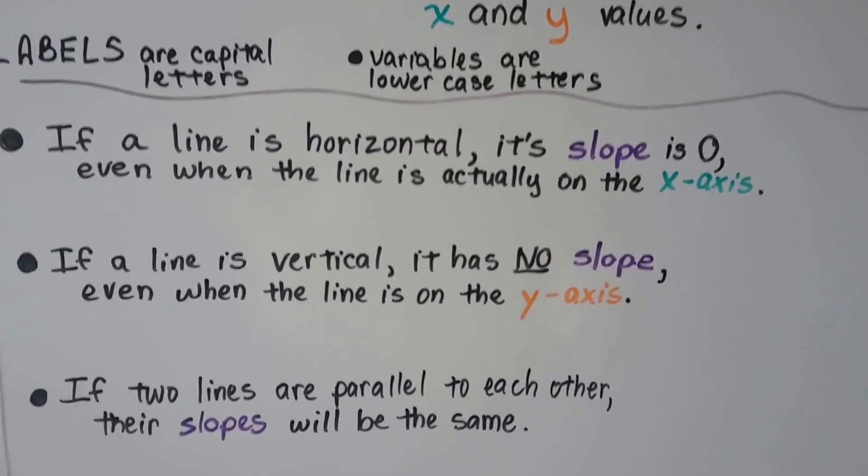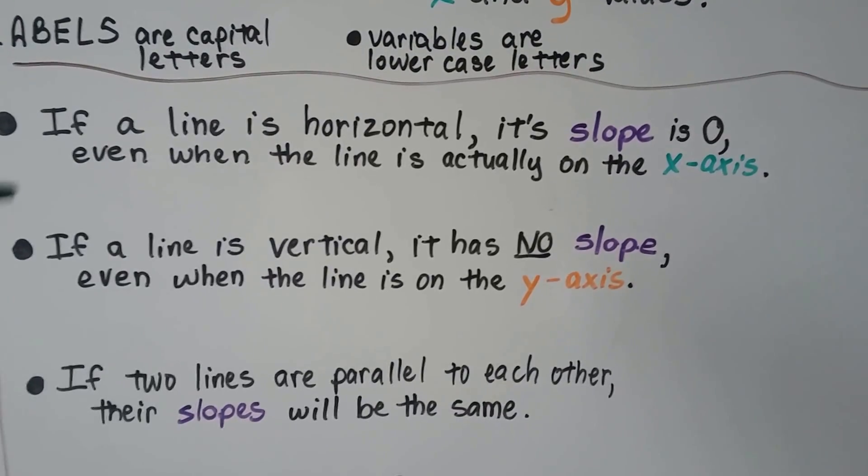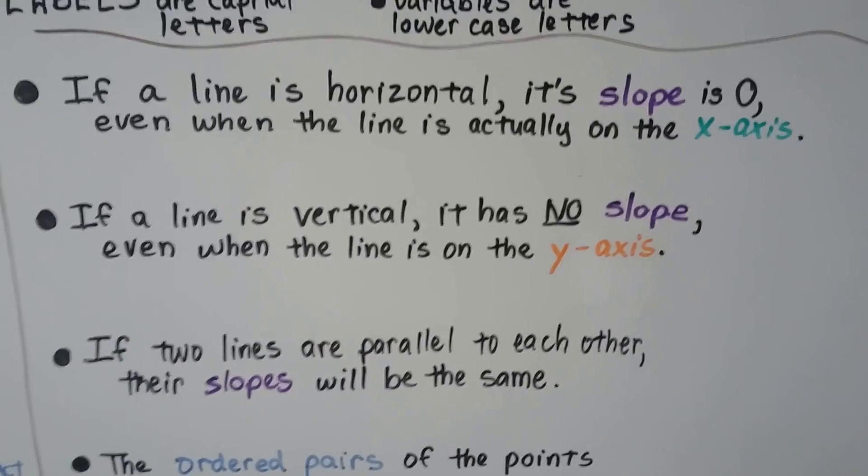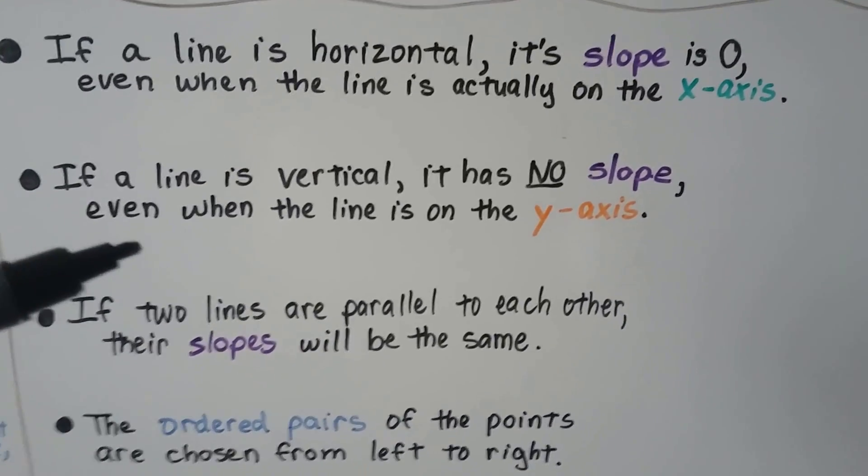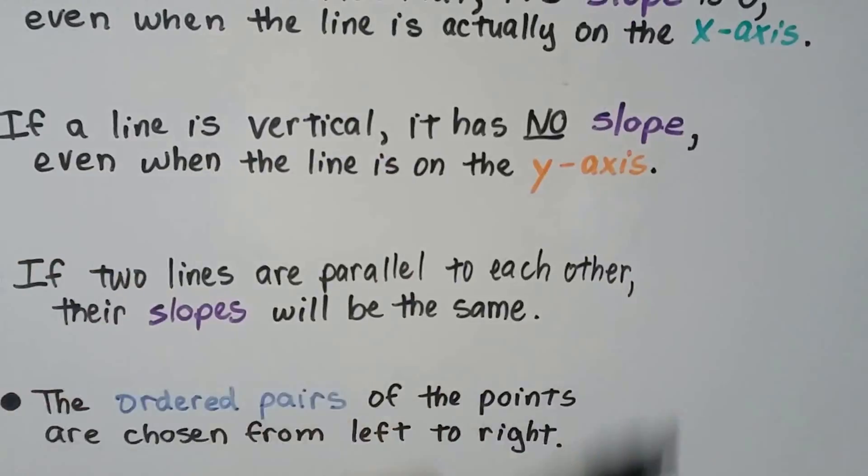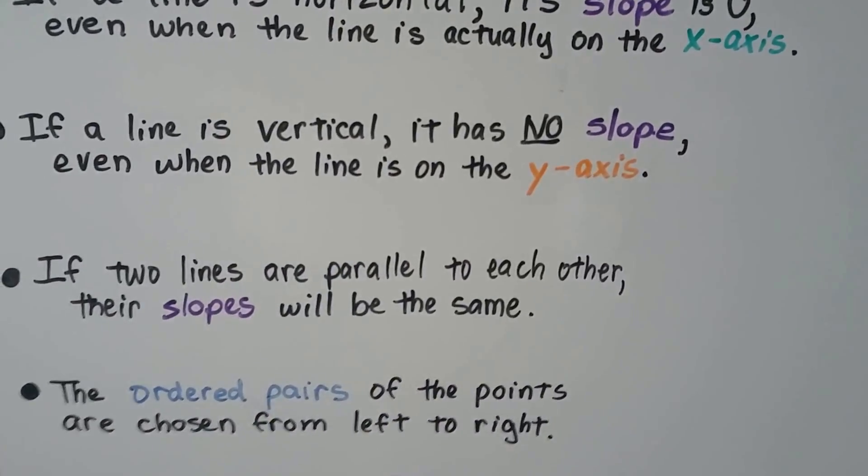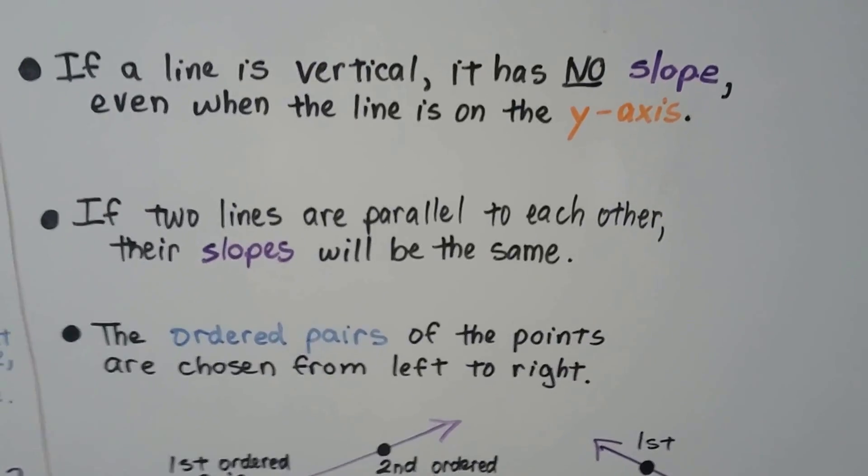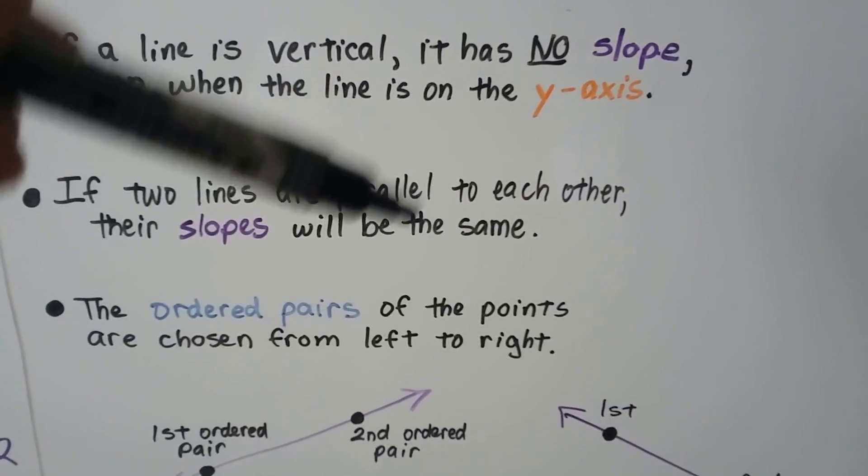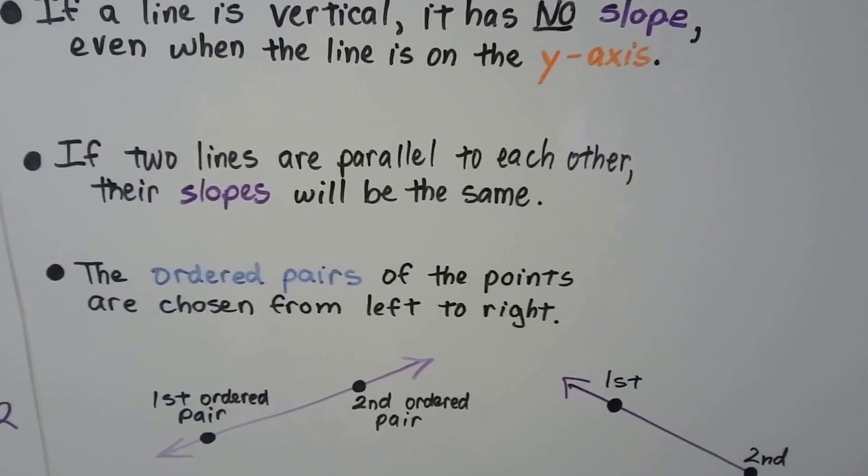If a line is horizontal, its slope is zero. A line can even be actually on the x-axis going following the x-axis. And if a line is vertical, it has no slope, even when it's on the y-axis. So a line can actually appear on the y-axis. And if two lines are parallel to each other, they're going to have the same slopes. Their slopes will be identical, the same.